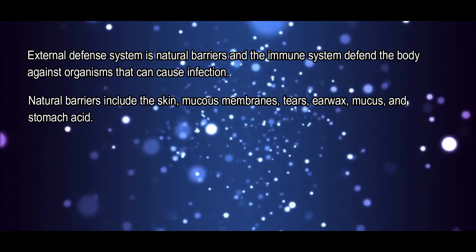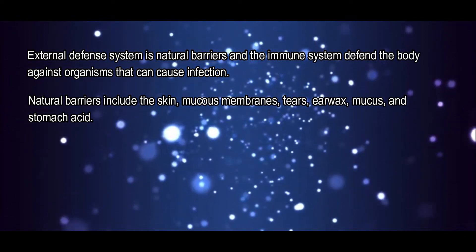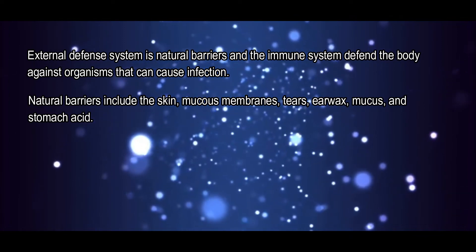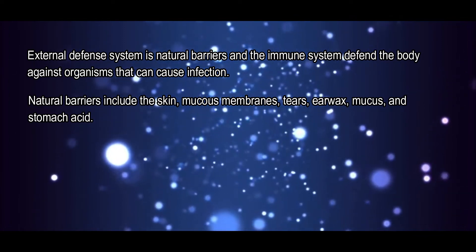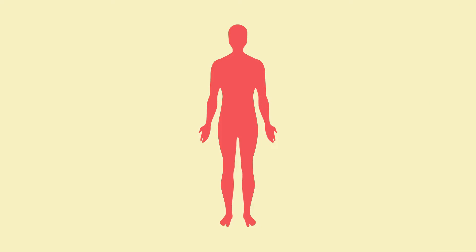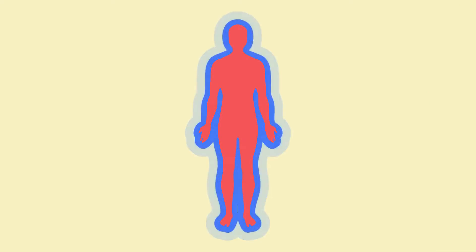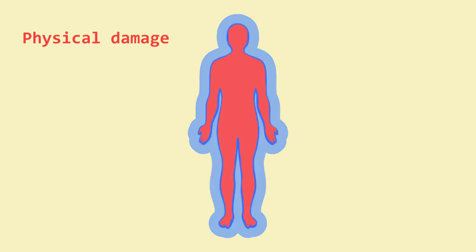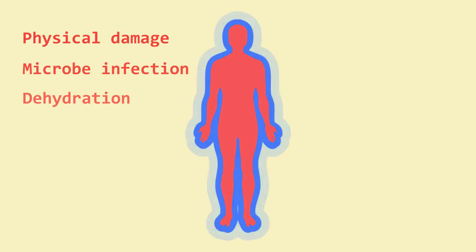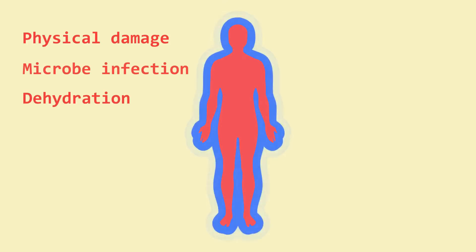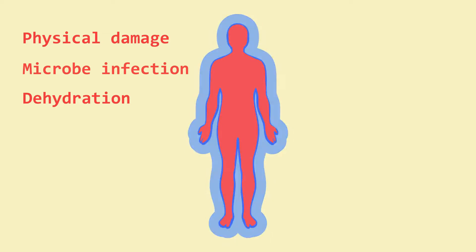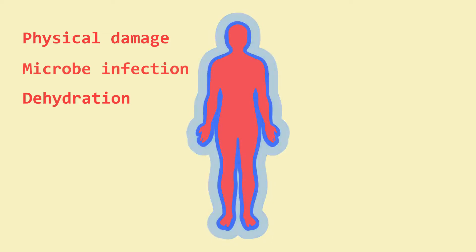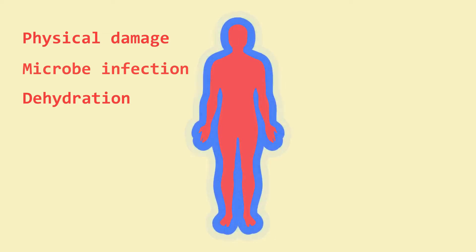Our biggest organ is, in fact, our skin. The skin covers the whole body, protecting our insides from physical damage, microbial infections, and dehydration. The skin acts as a physical barrier which is difficult for microbes to penetrate.